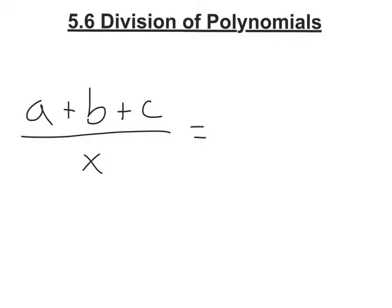This is section 5.6, Division of Polynomials. Most of this section is about the easy version of division, which is dividing by a monomial. So this is a polynomial, many numbers, and this is a monomial because there's only one. If you do this, the trick is you're going to split up this fraction.